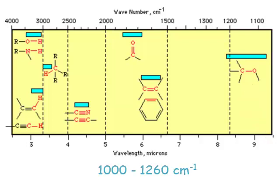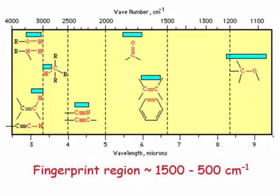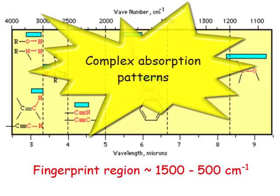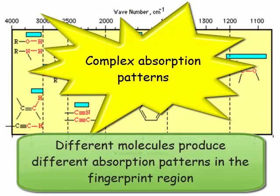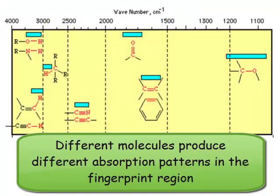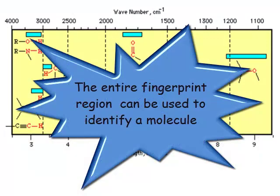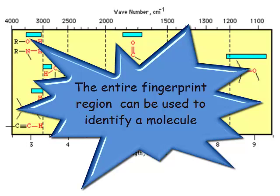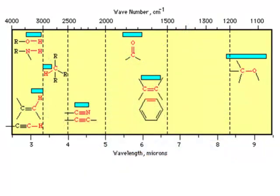But once you get down here, you're in what we call the fingerprint region of the spectrum. So the spectrum becomes very hard to assign on a spectroscopic basis. That is, you can't say that one particular mode corresponds to motions of one particular set of nuclei. But because it becomes so complicated, then that whole region becomes characteristic of the individual molecule. And so you can use that region like an identification code for the particular molecule that you're interested in.